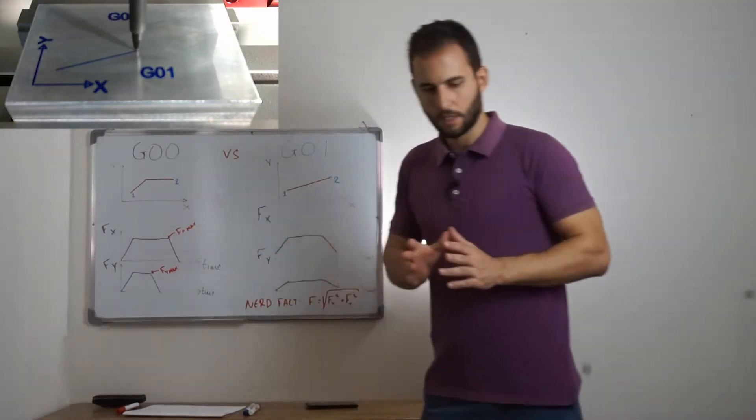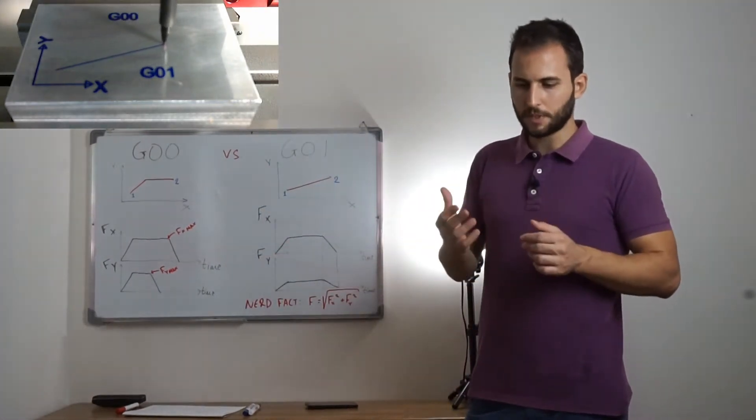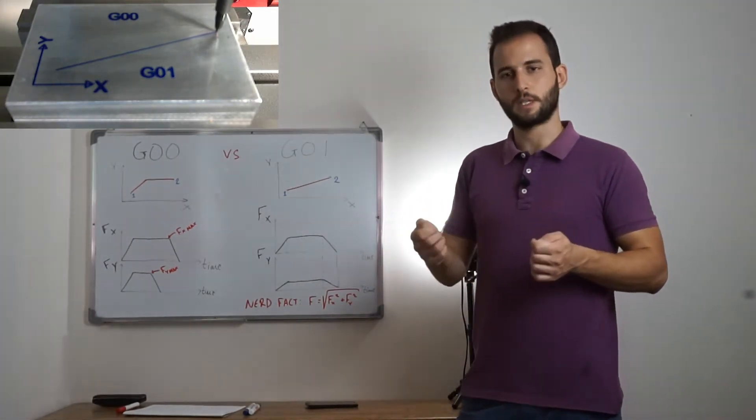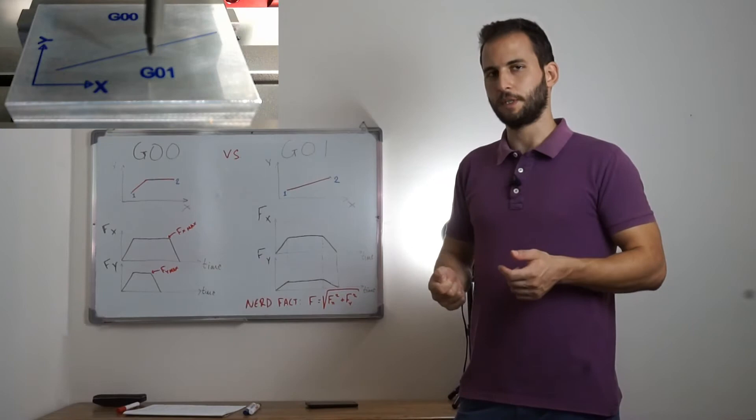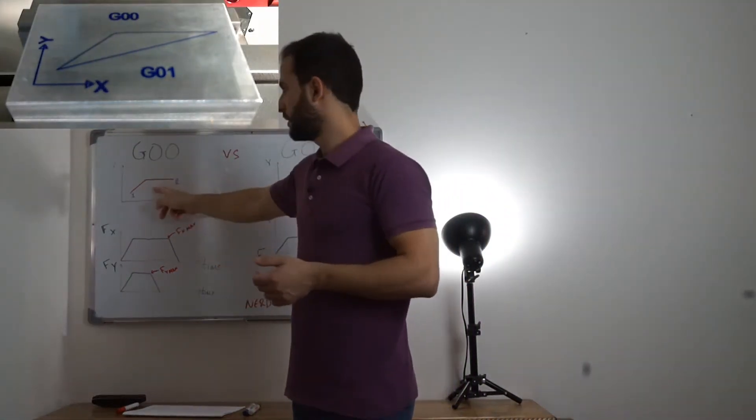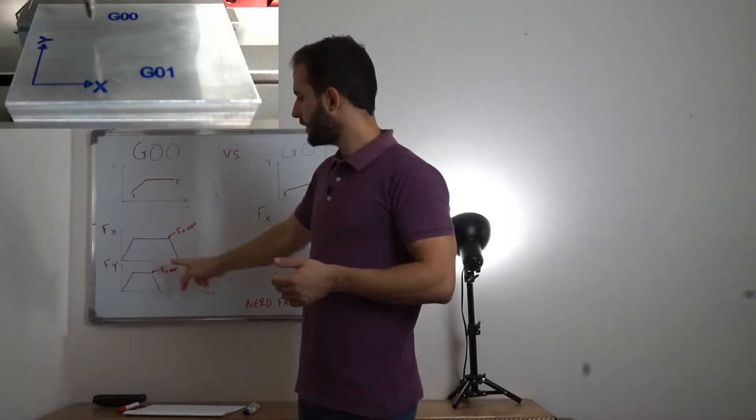This is why, when we program G0, we actually command the machine tool to drive its axis to their maximum feed rate. So, this movement can be analyzed as follows.